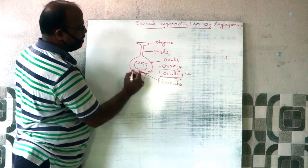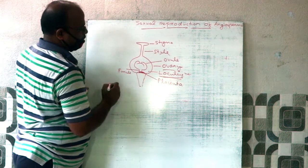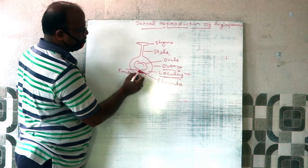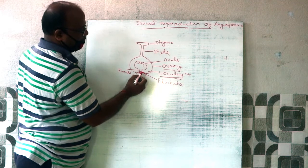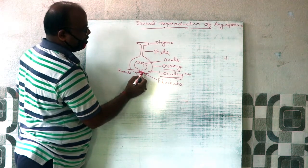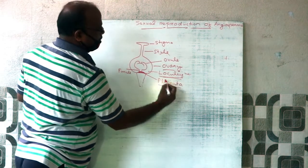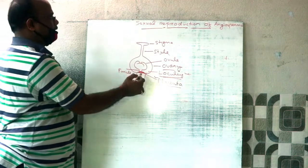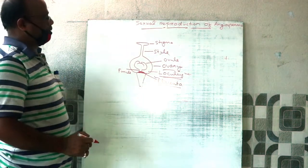The stalk of the Ovule is known as the Funicle or Funiculus. The Ovule, by means of its Funicle, attaches to the Ovary wall by means of a swelling tissue. Such swelling tissue of the Ovary wall to which the Ovule attaches is known as the Placenta. This is the structure of a typical Gynoeceum of a flower.